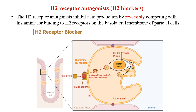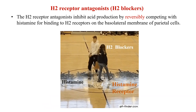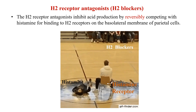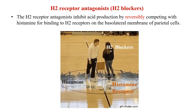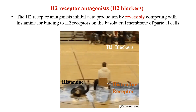When histamine is blocked from binding to the H2 receptor, the subsequent signaling cascade that would normally lead to increased gastric acid secretion is inhibited. As a result, overall production of gastric acid is reduced. So these H2 blockers inhibit acid production by reversibly competing with histamine for binding to the histamine receptors on the parietal cells.